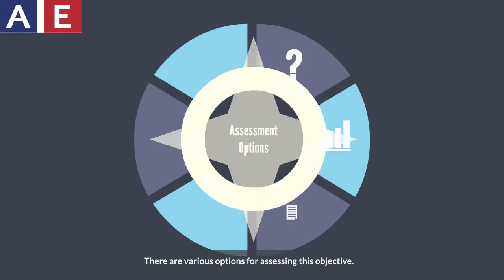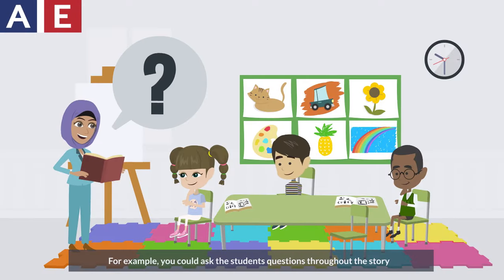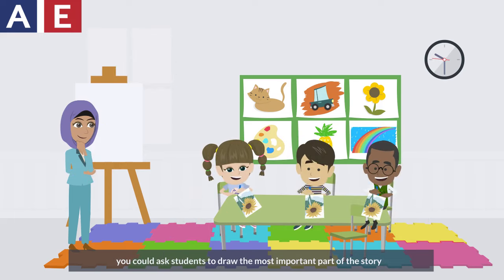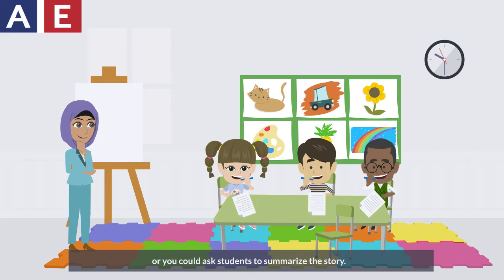There are various options for assessing this objective. For example, you could ask the students questions throughout the story. You could ask students to draw the most important part of the story. You could ask students to put pictures from the story in chronological order, or you could ask students to summarize the story.